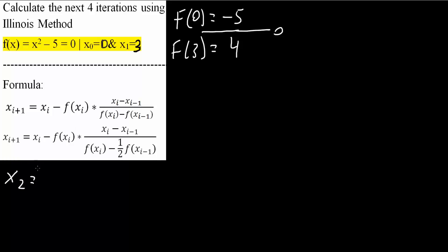So let's do that. So x1 minus f(x1) times x1 minus x0, so x0, divided by f(x1) minus f(x0), like this.